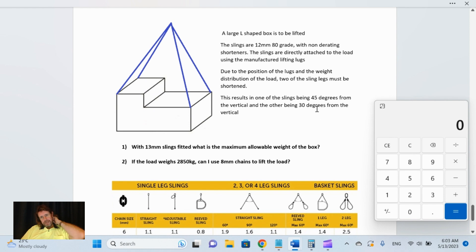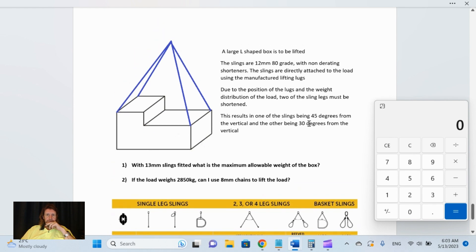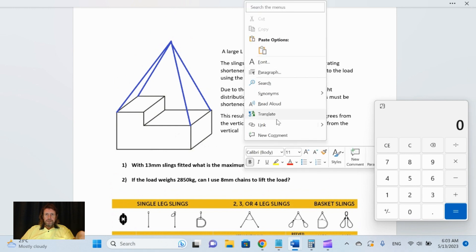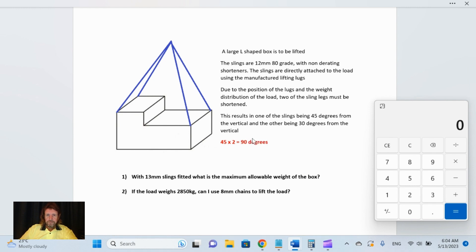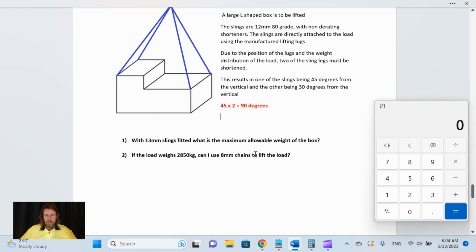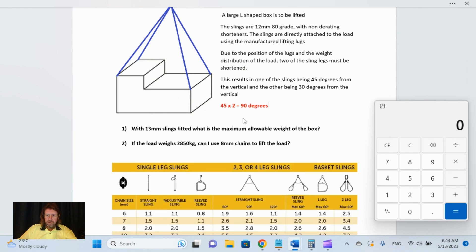So 45 times 2 equals 90 degrees, and then 30 degrees multiplied by 2 equals 60 degrees. Basically what we're doing is finding out which one's the biggest, because the biggest one gives us the maximum deration.